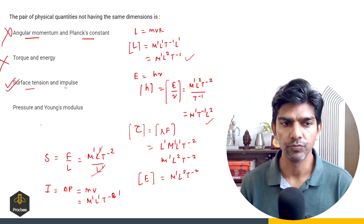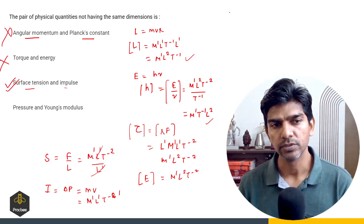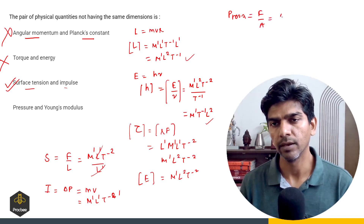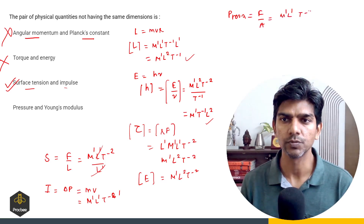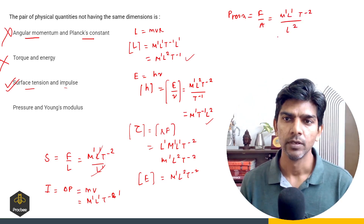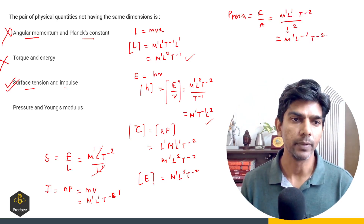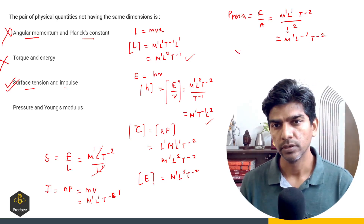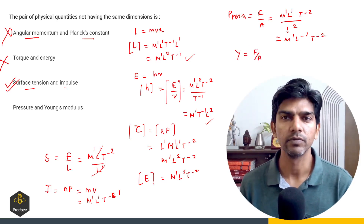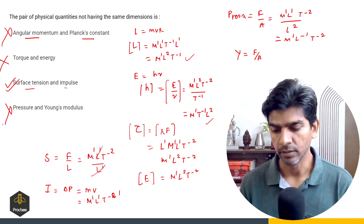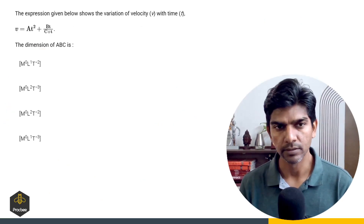Let us check the fourth option also. Pressure is force upon area: M raised to power 1, L raised to power 1, T raised to power minus 2 upon L raised to power 2, giving M raised to power 1, L raised to power minus 1, T raised to power minus 2. Young's modulus has the same dimension as stress, so also M raised to power 1, L raised to power minus 1, T raised to power minus 2. Option 4 is incorrect, so option 3 is the right answer.